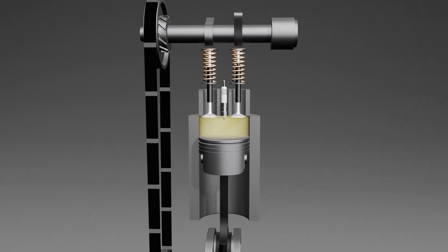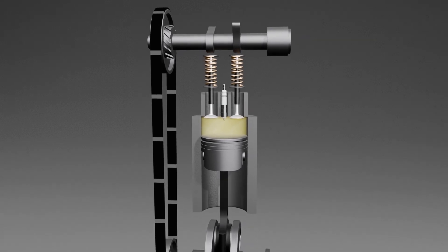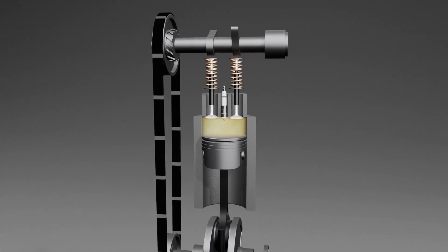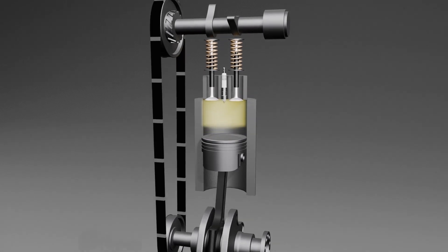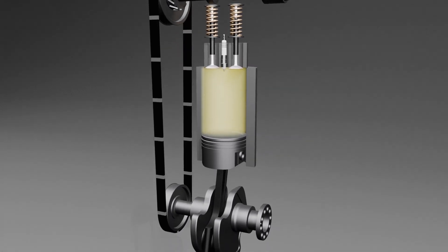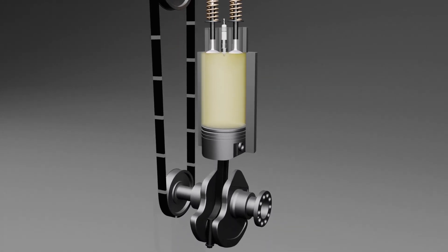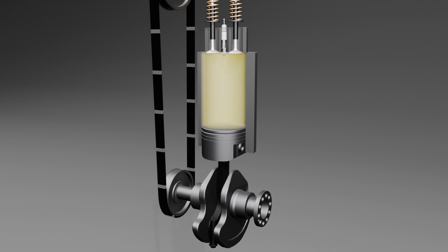The explosion releases large quantities of carbon dioxide and water vapor, which rapidly expand and push the piston downward with great force. This downward motion turns the connecting rod, which rotates the crankshaft.